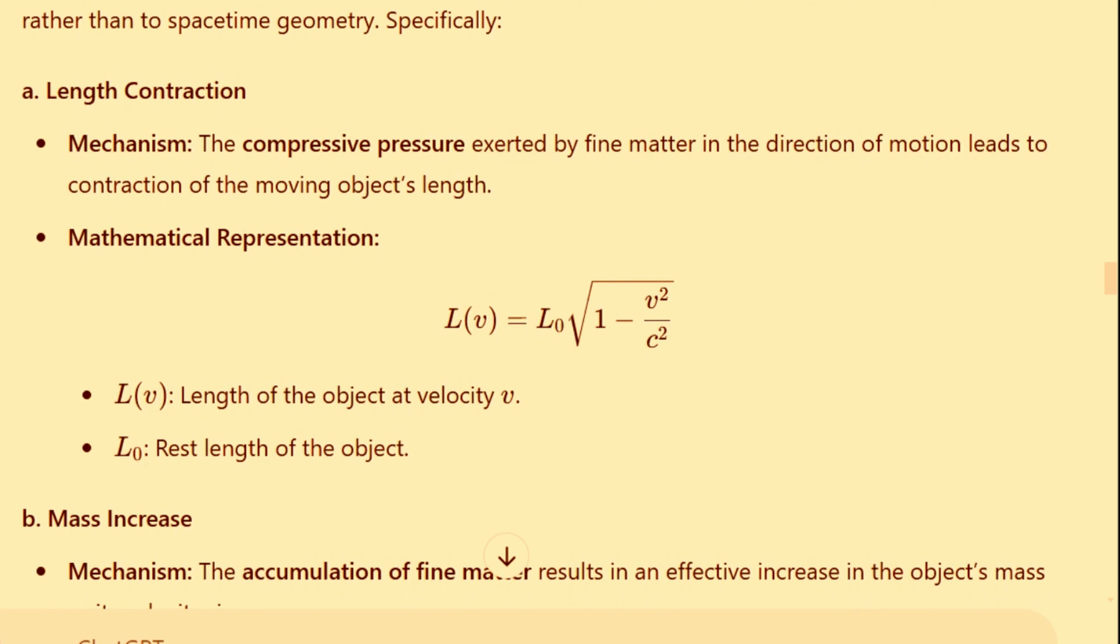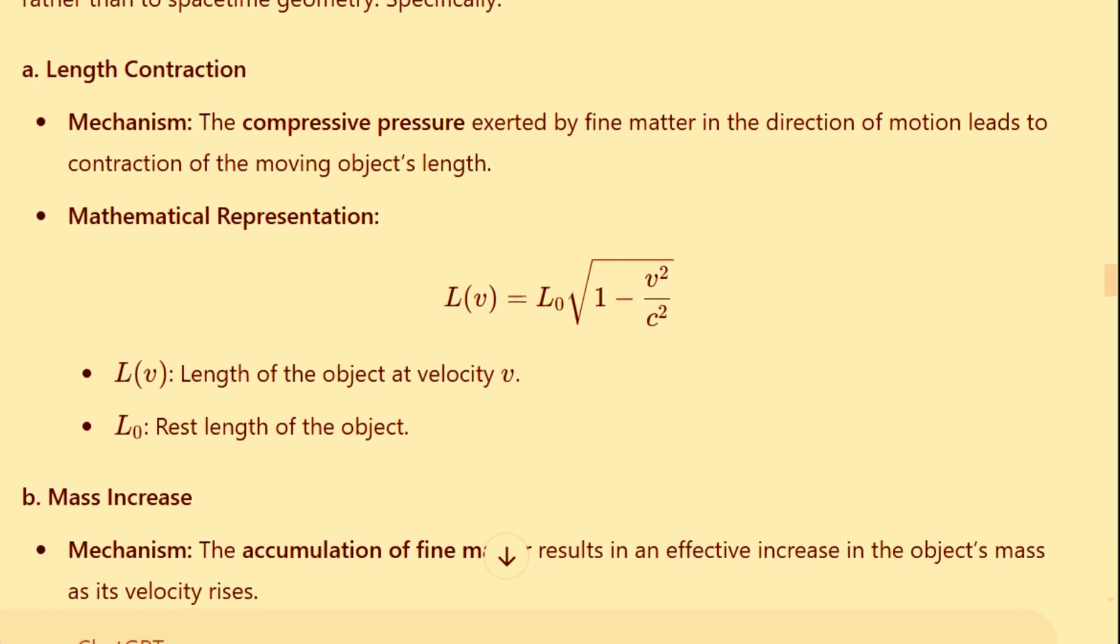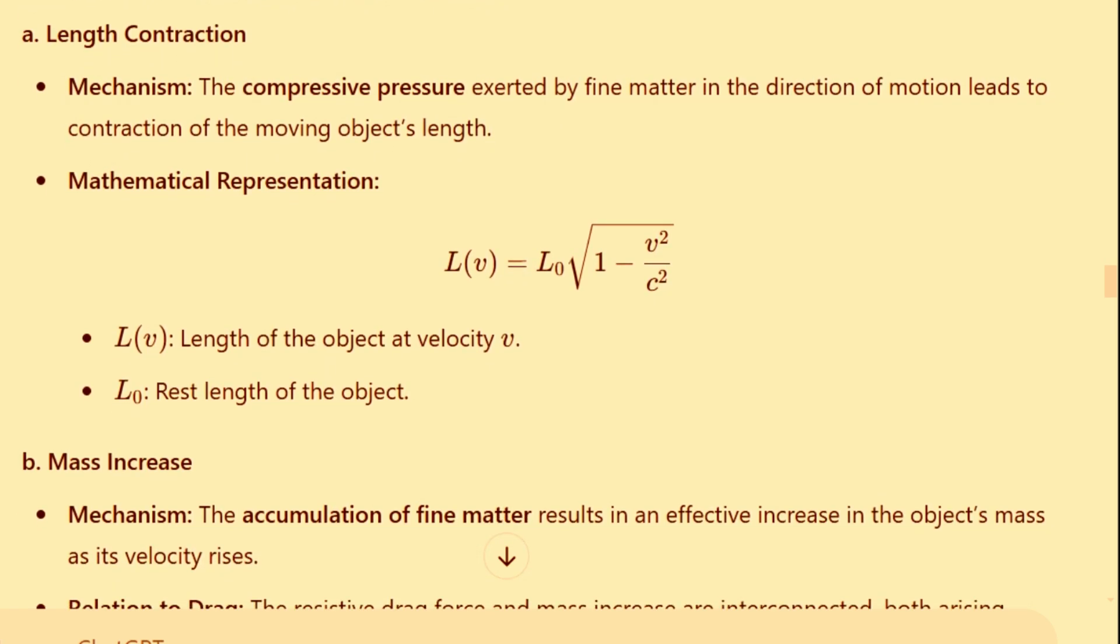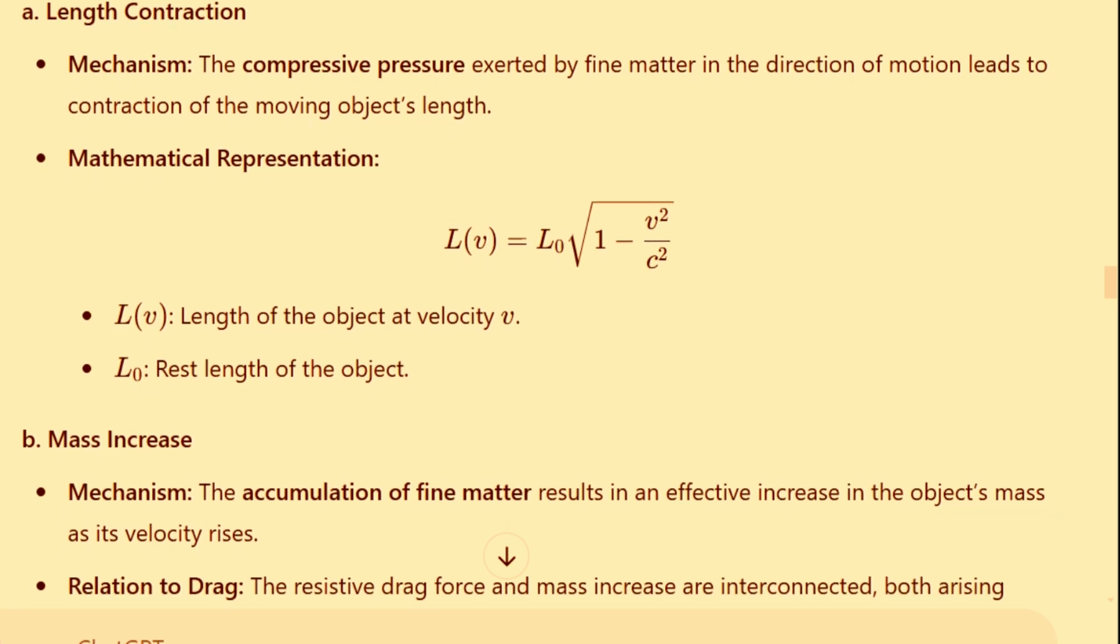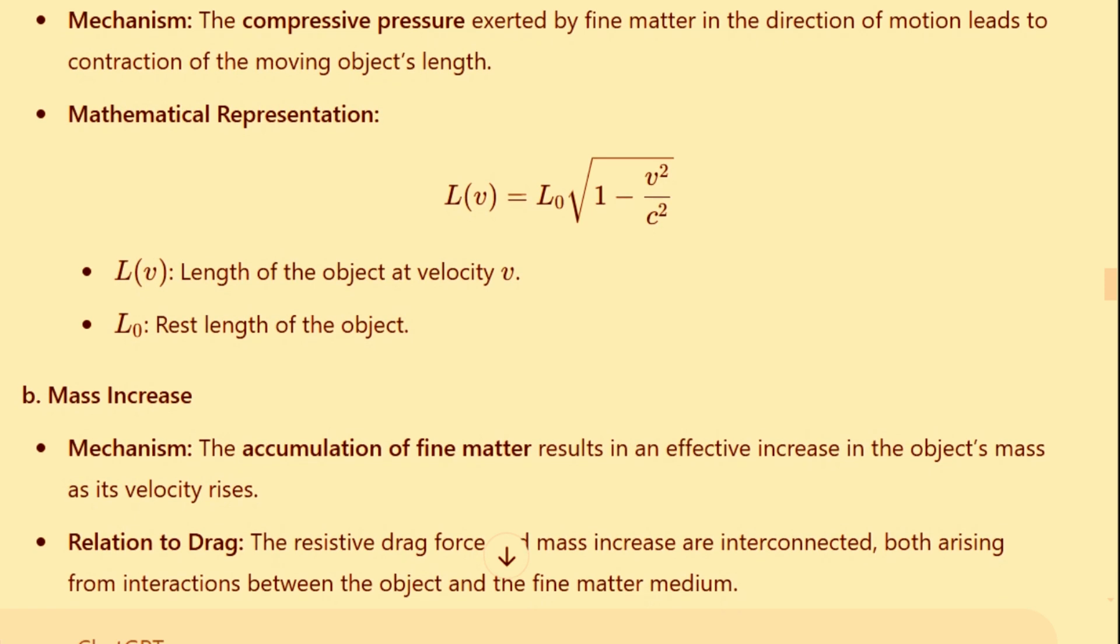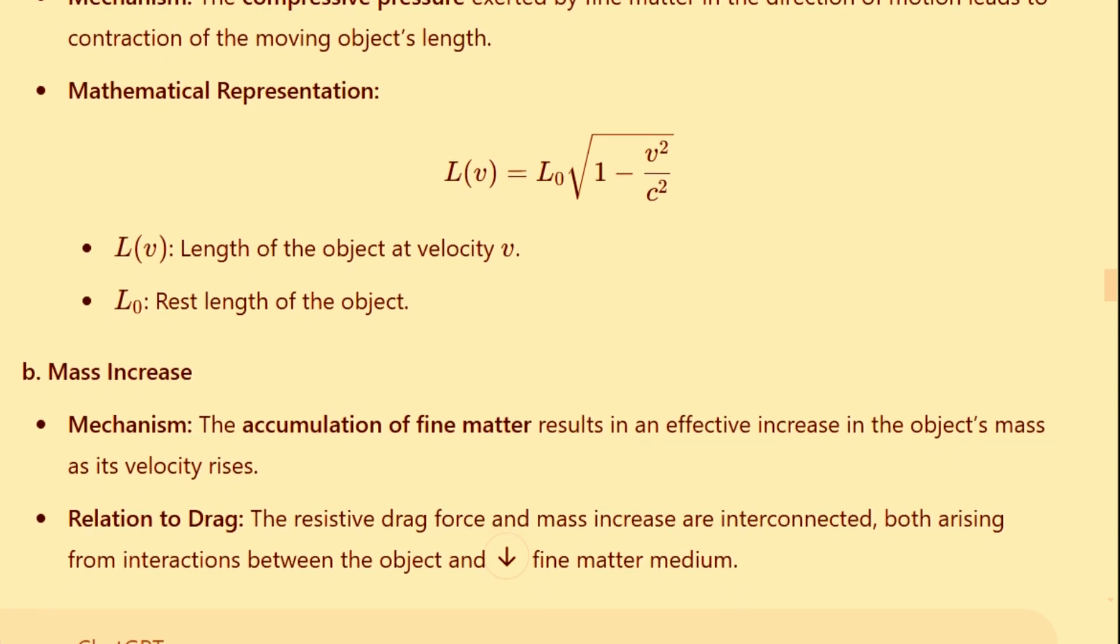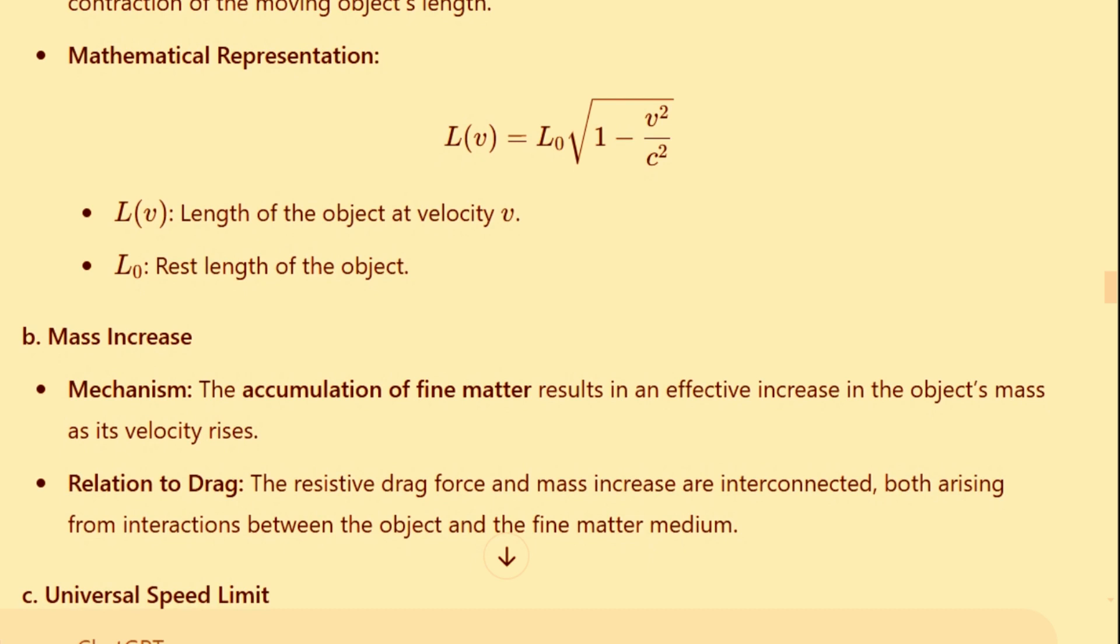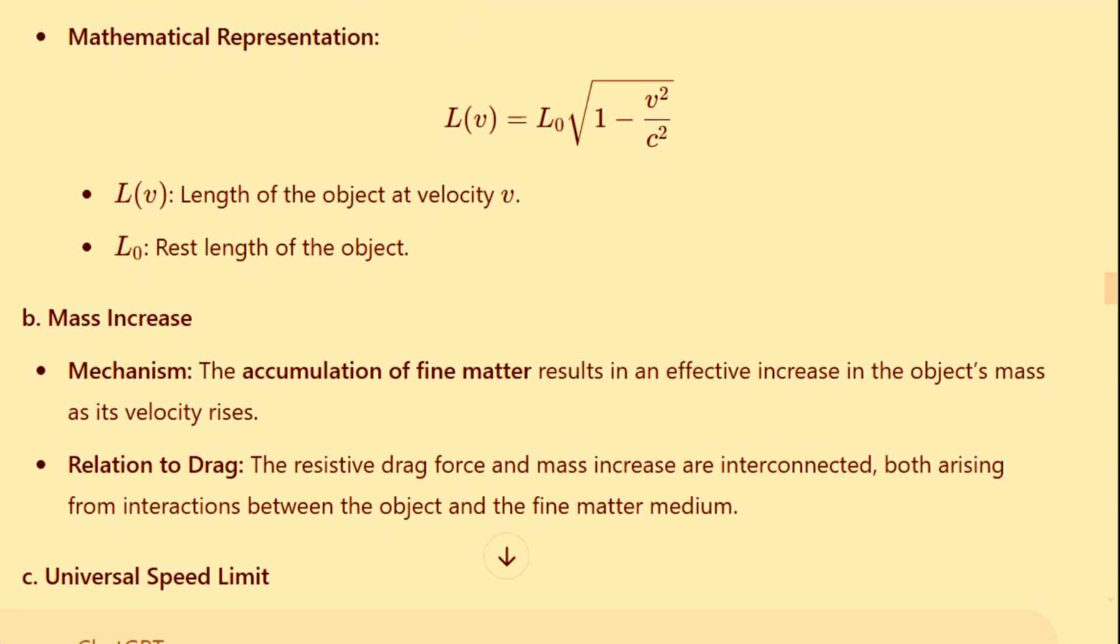Mathematical representation: the length of the object at velocity v, represented as l of v, can be calculated by the equation l of v equals l0, multiplied by the square root of 1 minus the fraction v squared over c squared. In this equation, l of v represents the length of the object at velocity v, and l0 is the rest length of the object.